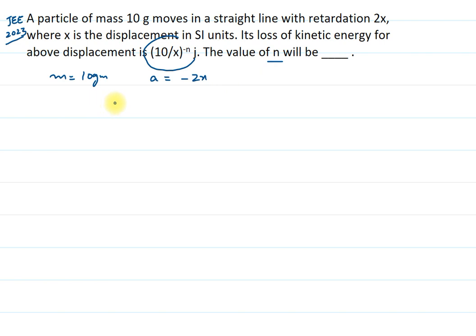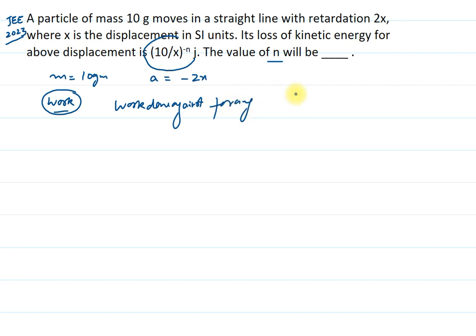We need to calculate the value of n. Here we simply use the work-energy theorem. As we know, work is equal to change in kinetic energy. In this case, the work done against the force of retardation is basically equal to the loss of kinetic energy. So we will calculate the work done and then equate that with the loss of kinetic energy, which is given in the question, and from that we will get the answer for n.